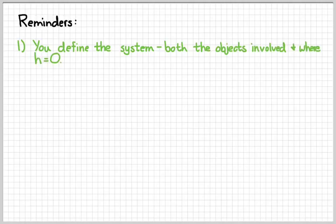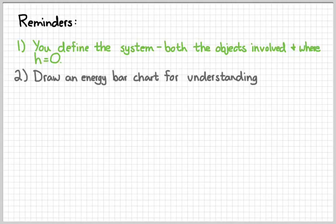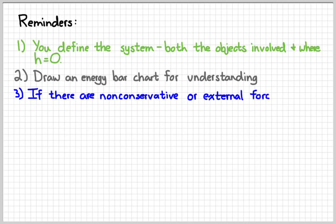A couple of reminders before we wrap up. First, remember that you define the system, both the objects within the system, and where you're defining your height to be zero. More generally, it also includes the fact that velocities are relative, and so you're defining what the kinetic energy is relative to. Second, draw an energy bar chart before and after whatever interaction we're studying to help you understand what's going on in the problem. If you come and ask me a question about a situation, I'm probably going to ask you to do that first. Doing that will probably help you answer your question. And then third, if there are non-conservative forces or external forces involved, then we have to go back to the fact that work is equal to change in energy. We would have to figure out how much work is being done on the system, and therefore figure out how the energy is going to change.